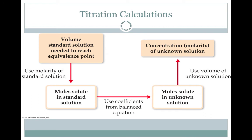Here's a schematic for how titration calculations work. First, we take the volume of the standard solution or titrant needed to reach the equivalence point, and use the molarity of that titrant to calculate the moles of solute in the titrant — in our previous example, that would be the moles of NaOH added. Then, using the coefficients from the balanced equation, we determine how many moles of solute were in the unknown solution — in the previous example, that would be our HCl. Finally, using the initial volume of that solution, we calculate the molarity of the original unknown or analyte.